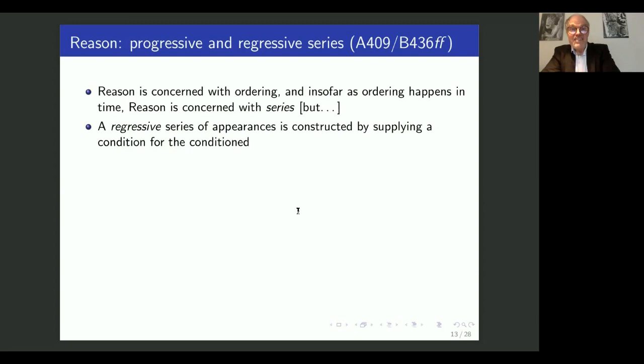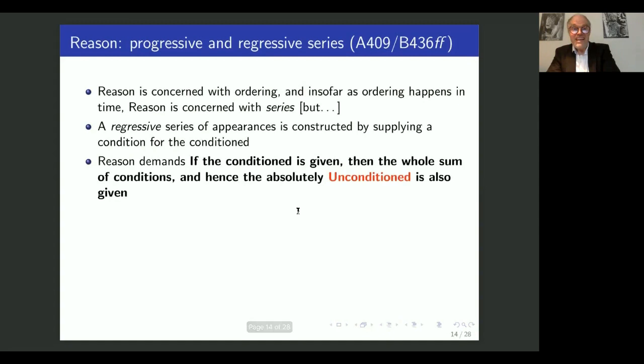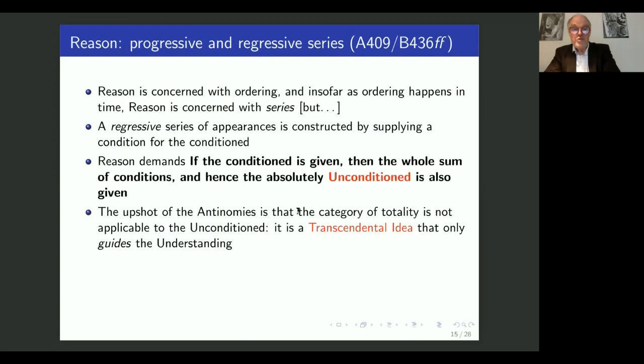Now, as we know, a regressive series, as distinguished from a progressive series, is constructed by supplying a condition for the conditioned and doing this again and again. And then Kant has this sentence in bold: reason demands if the conditioned is given, then the whole sum of conditions and that's the absolutely unconditioned is also given. Now, reason may demand this. But as we know, the absurd of the antinomies is that the category of totality is not applicable to the unconditioned. And it is called a transcendental idea that only guides the understanding, but is not itself an object of the understanding.